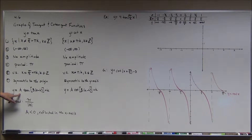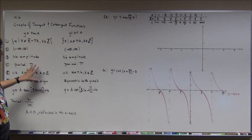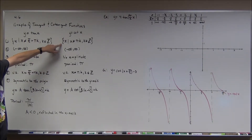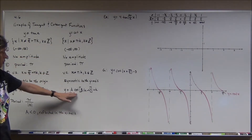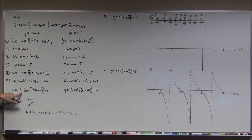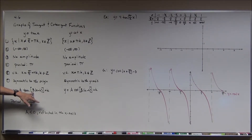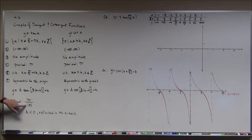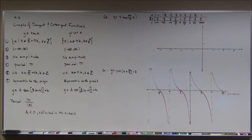For the cotangent, the main difference is a slightly different domain, because we exclude values that make sine zero — cotangent of x is cosine of x over sine of x — and we have vertical asymptotes at those same values. Now, the parameter a will stretch or shrink the graph, but because there's no amplitude, unless a is extremely close to zero or extremely large, you won't see a dramatic change. The parameter b affects the period: take the parent function's period and divide by the absolute value of b. If a is negative, you reflect across the x-axis.